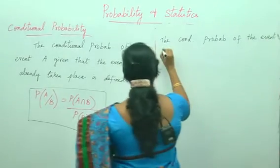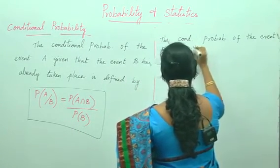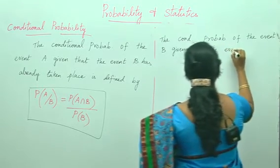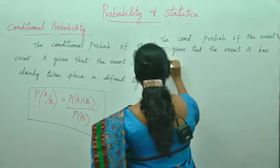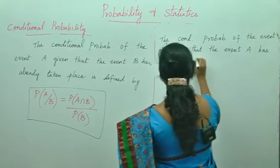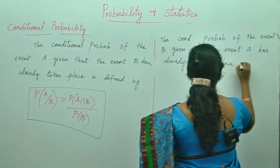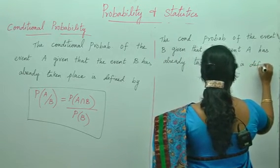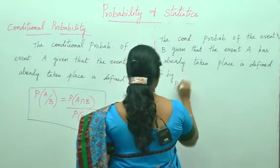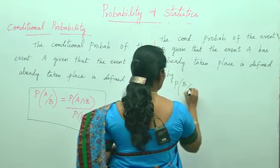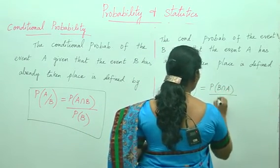Event B given that the event A has already taken place. This is defined by P of B given A which is equals to P of B intersection A divided by P of A.